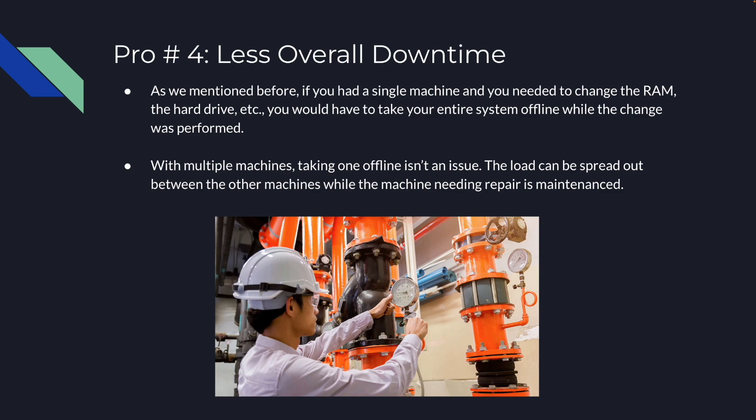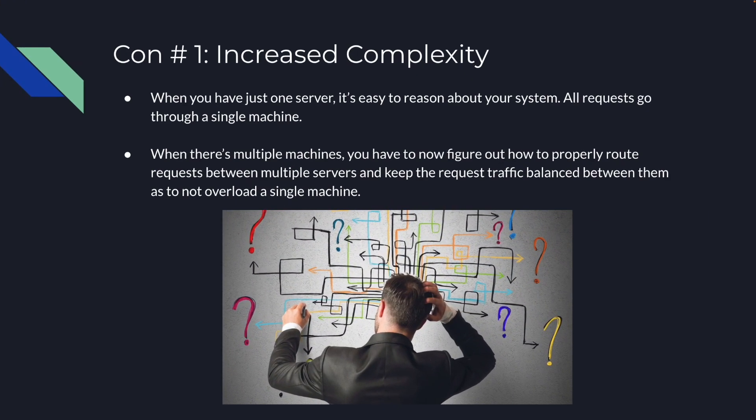Another pro is that there's less overall downtime. If you had a single machine and needed to change the RAM, hard drive, or CPU, you'd have to take the entire system offline while the change was performed. With multiple machines, taking one offline isn't an issue — the load can be spread out between the other machines while the machine needing repair is under maintenance.